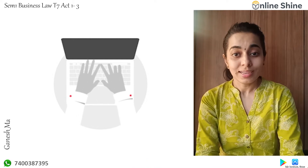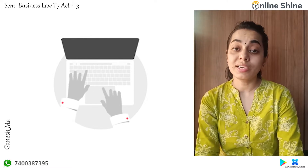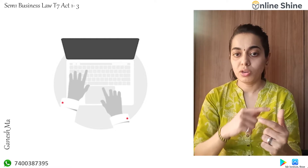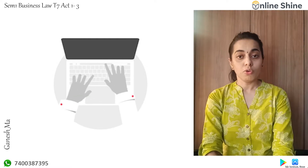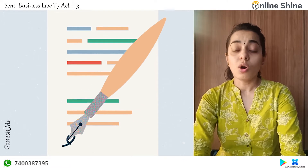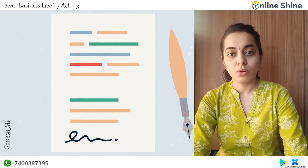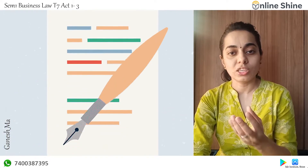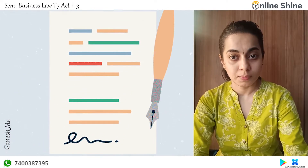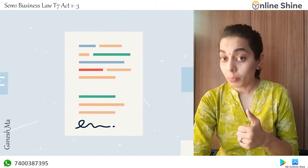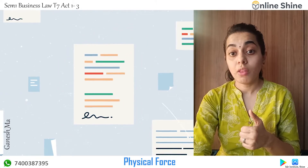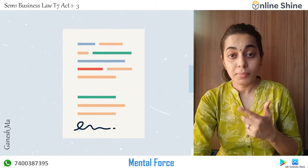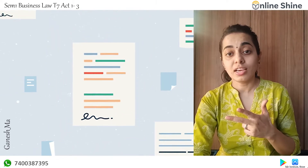There are a few terms — voidable, void, illegal, unenforceable — which are different types or classifications of contracts that we will correlate later. Coming back to free consent: coercion can also be called physical force; undue influence can also be called mental force; misrepresentation is not purposely deceiving — it is more like a misunderstanding.